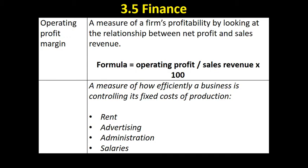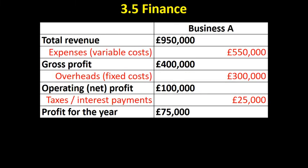The final ratio is the profit for the year margin. This is how much money is available for shareholders at the end of the day, so it may be a very important ratio for shareholders. It's calculated as operating profit minus taxes and interest payments — the cost of debt — and that's how much money is left for the year.